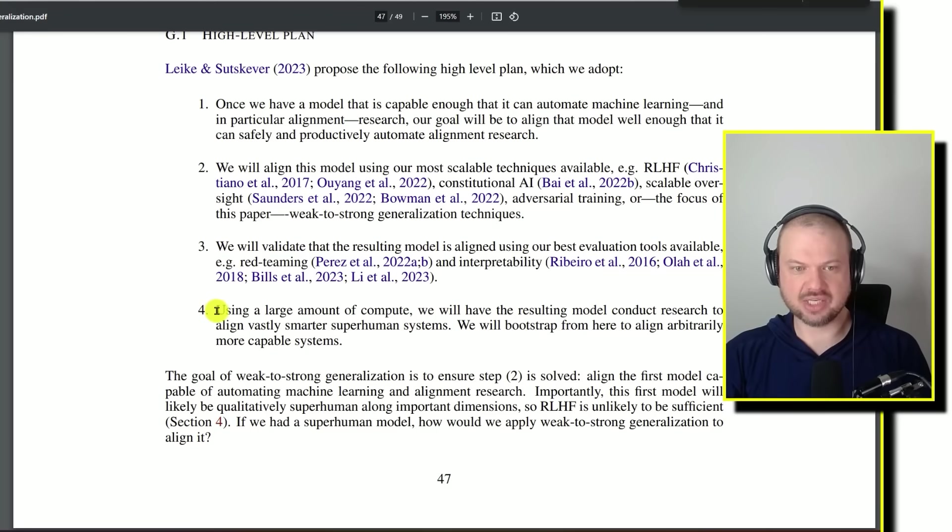And then they're saying number four, using a large amount of compute, we will have the resulting model conduct research to align vastly smarter superhuman systems. We will bootstrap from here to align arbitrarily more capable systems. And we've talked about this before, so there's this idea that we can take these smaller models, and by using just vast quantities of compute, almost get a glimpse into what that model would look like if it was much stronger. And of course, that costs a lot of money. We need to have a lot of equipment to be able to do that.